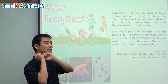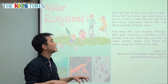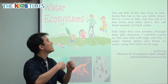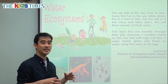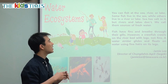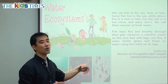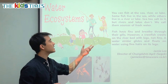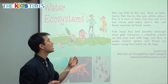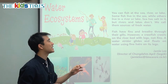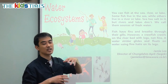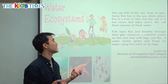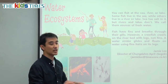You can fish at the sea, river, or lake — 바다, 강, or 호수. Some fish live in the sea, 바다 물고기, while others live in a river or a lake — 강물고기 or 호수 물고기. The sea has salt, 소금, in it, but rivers and lakes don't. We call the sea salt water, and rivers and lakes fresh water, or 민물. We call them sources of fresh water — we can drink it.